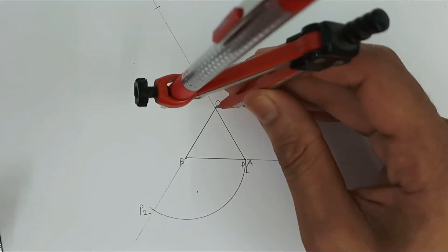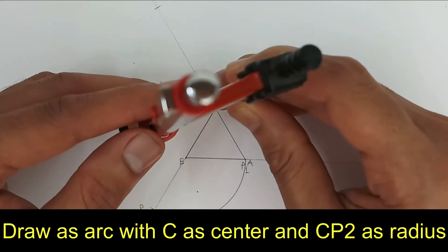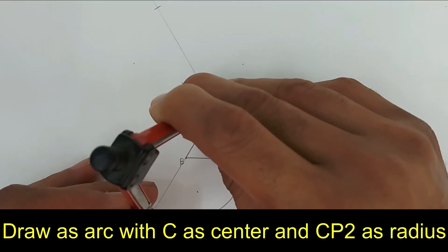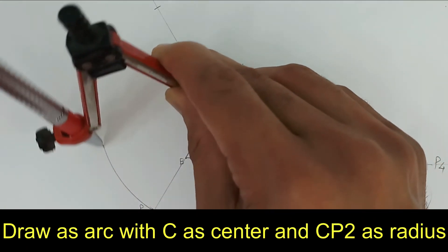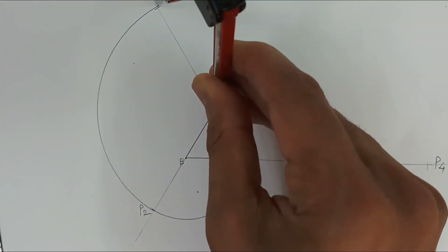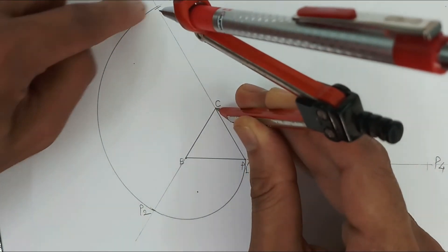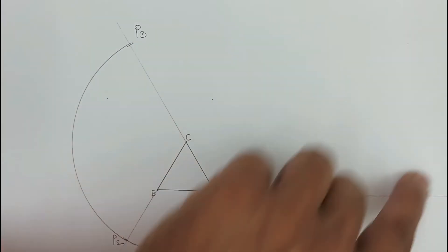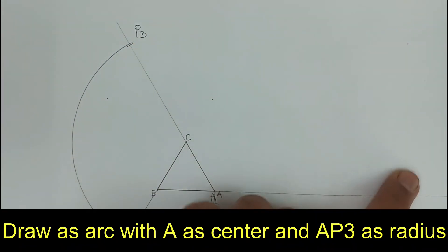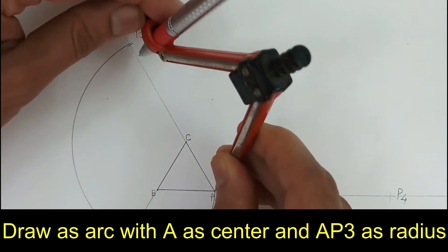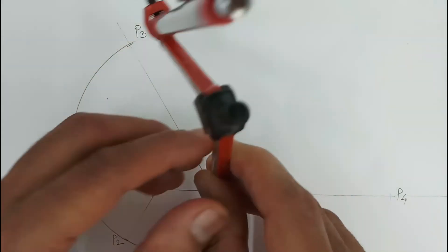Now next it rotates around corner C with C as center and CP2 as radius. So this much part we have to complete by taking C as center and CP2 as radius. And the remaining part of the curve, this remaining part of the curve, we have to complete by taking A as center and AP3 as radius.